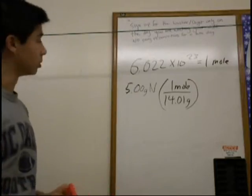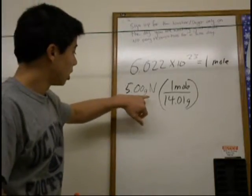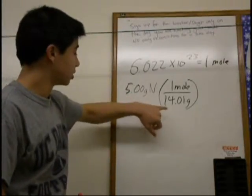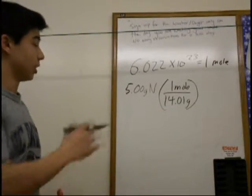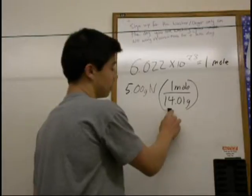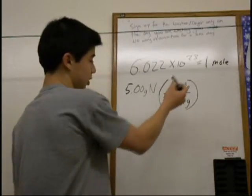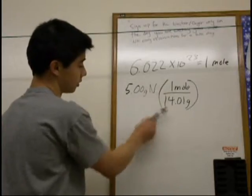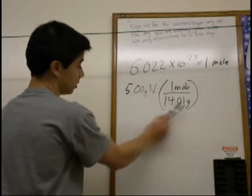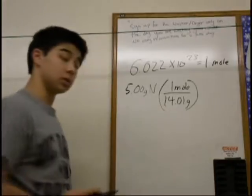So using the periodic table, you use the atomic mass to find the atomic mass and the molar mass, which is grams per mole. And in this case, we're going to put moles over grams, so that the grams will cancel out and we'll be left with moles.